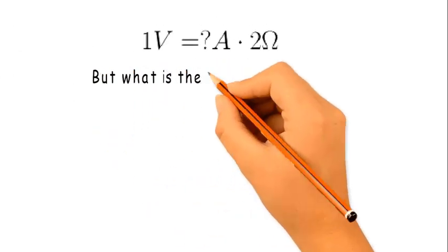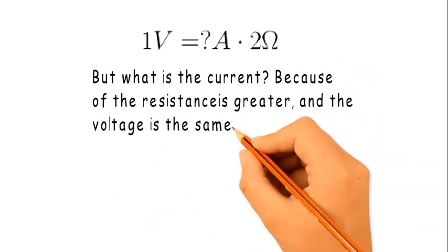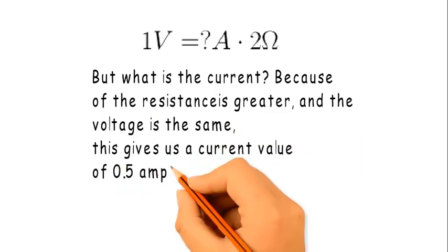But what is the current? Because the resistance is greater and the voltage is the same, this gives us a current value of 0.5 amps.